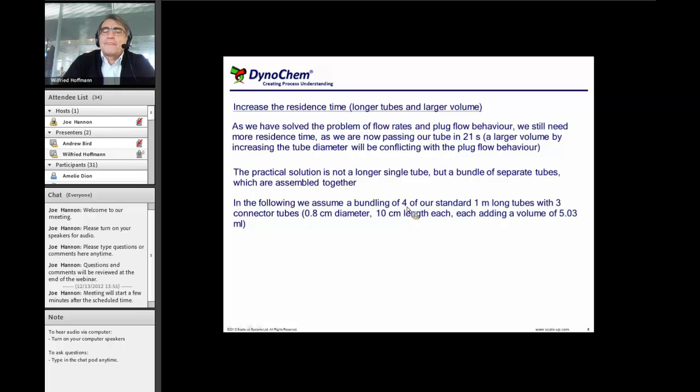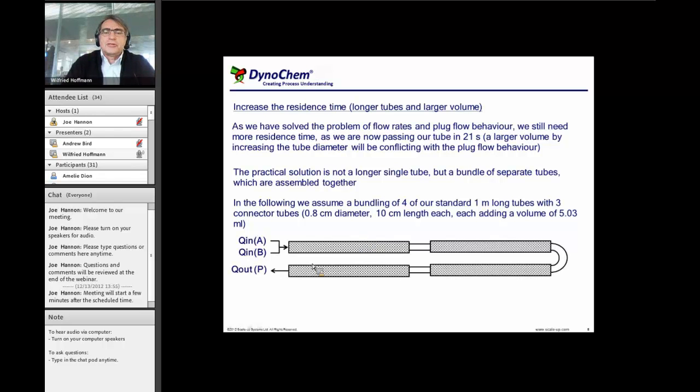In this case, we assume that we have four of our one meter long tubes, in reality, you can have whatever you like at residence times. And the point is that these four tubes are now connected and these connectors need not necessarily have the same diameter. They will add to the volume because they have a certain length, they have a certain volume. And so a construction typically to fit the needs, maybe something like this. So now we have four tubes, three connectors, and we have an increased residence time.